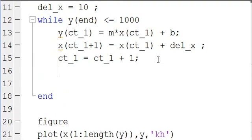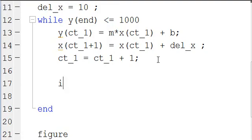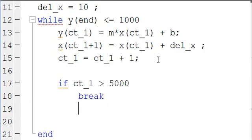So you say something like, if ct_1 is greater than 5000, break, fprintf('autobreak').